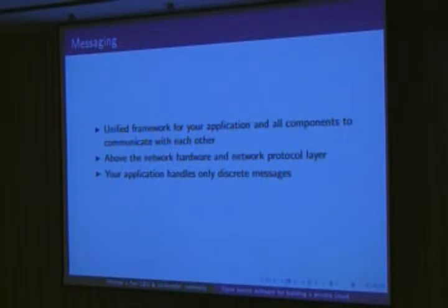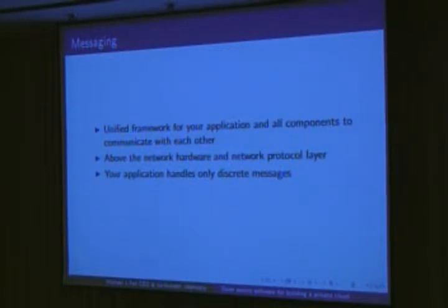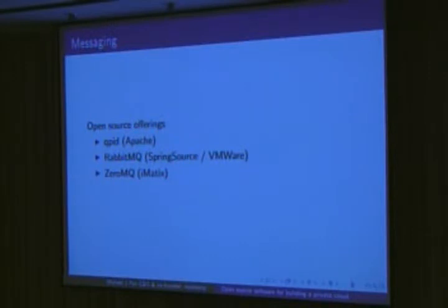The other thing that you need in your platform is a way for all your different nodes to communicate with each other easily — that's a unified framework for messaging. It sits on top of the network and the hardware and network protocol layers, so it allows your application to not have to worry about parsing of raw binary data and just handle discrete messages. Some of the offerings include Cupid, released by Apache, and RabbitMQ — RabbitMQ is owned by Rabbit Technologies, which is owned by SpringSource, ultimately by VMware. These things are all pretty stable. And then 0MQ is developed by Imatics. Within our company, we actually use 0MQ — you can download the source, compile it, and be up and running in less than five minutes. For us, it was really easy to use.